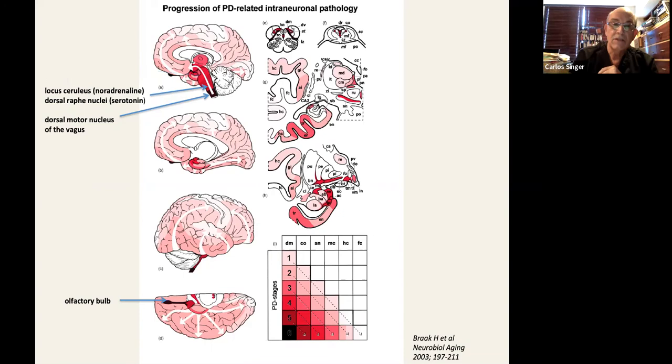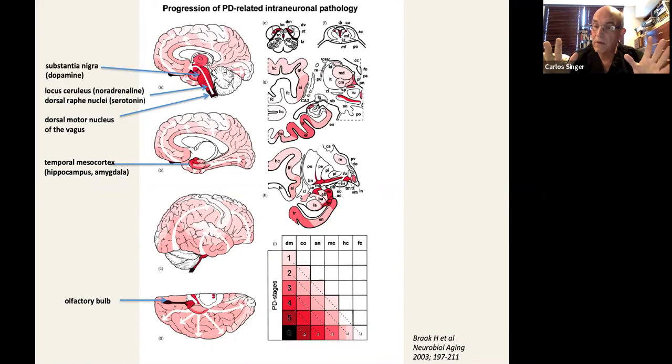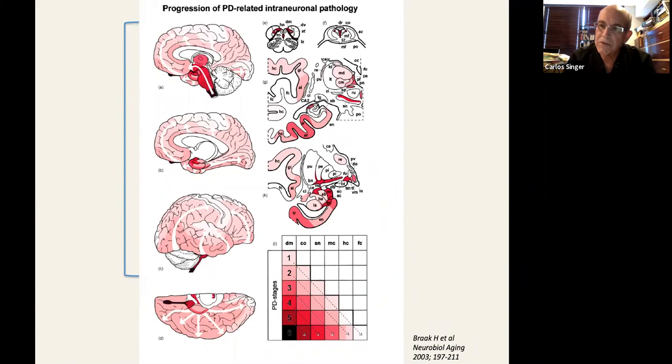In stage four, we finally start invading the cortex. First, we go into the mesocortex, the hippocampus and amygdala. And we have a substrate for what's happening to the memory mechanisms, what's happening to anxiety. Finally, gradually, it encompasses a number of regions in the neocortex, and that's what we call stages five and six of Braak's staging system.